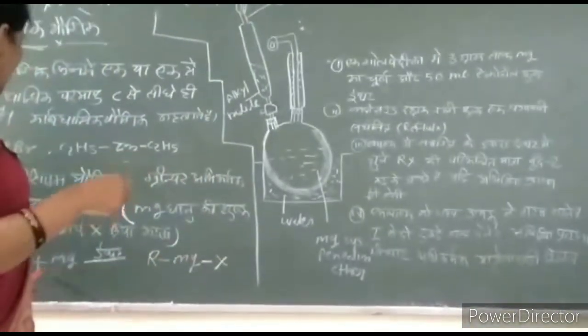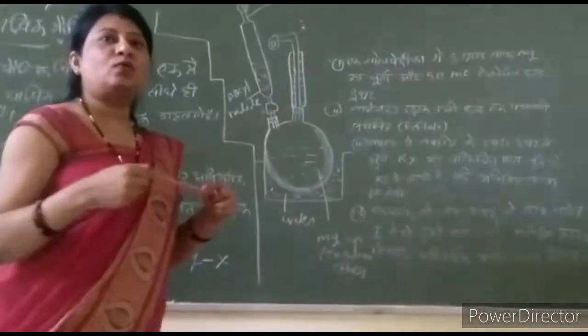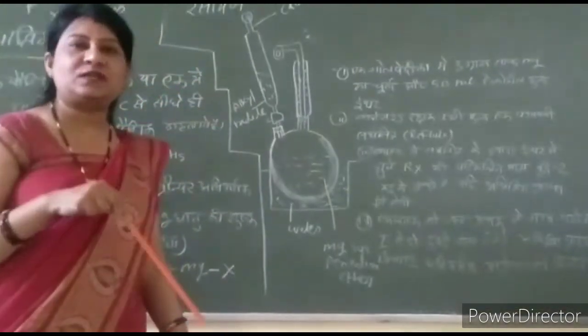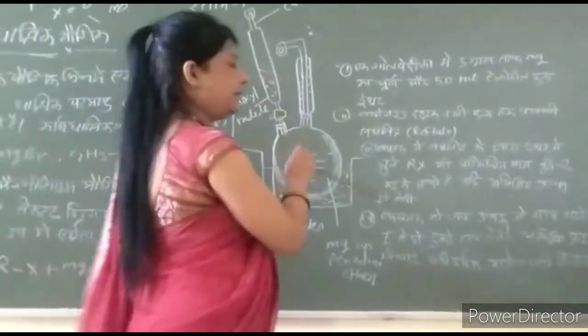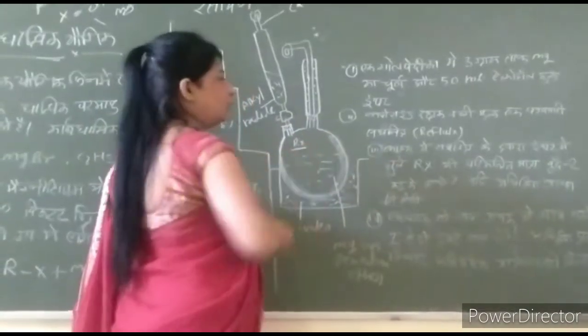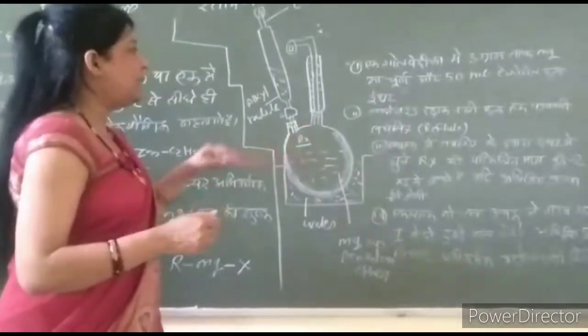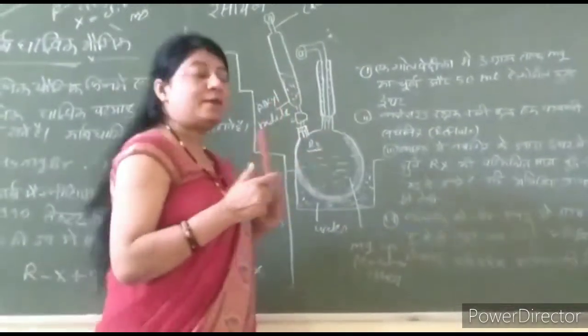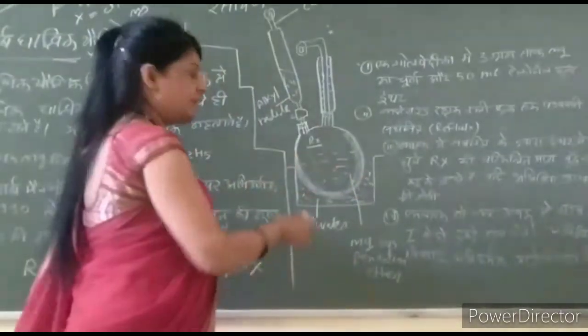It's called alkyl halide and magnesium, so it's called R and X, and when we use any of our own can't be used.